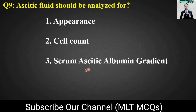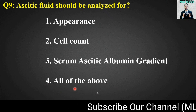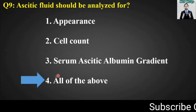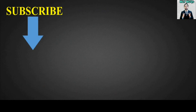The right answer for this MCQ is option number four: ascitic fluid should be analyzed for appearance, cell count, and serum ascitic albumin gradient. So option number four is the right one. Thank you so much dear students for watching MLT MCQs. If you found this video useful, like this video, share it with your friends. Take good care of yourself. Allah Hafiz.